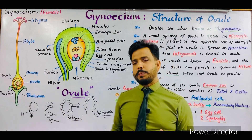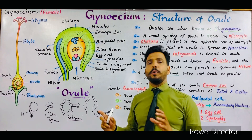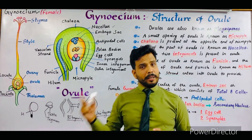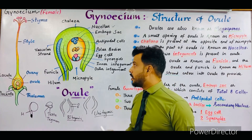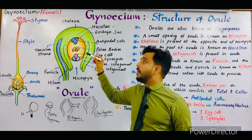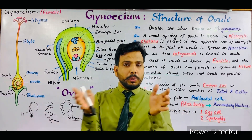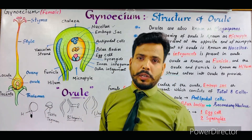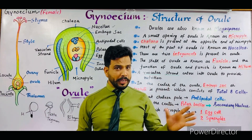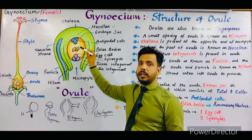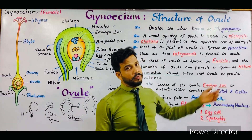All eight cells present inside the embryo sac are haploid in nature, meaning N in number — having half the number of chromosomes. The two polar bodies are haploid, and when they fuse together to form a secondary nucleus, that secondary nucleus becomes diploid (2N). So these two polar bodies will form a secondary nucleus just before fertilization.